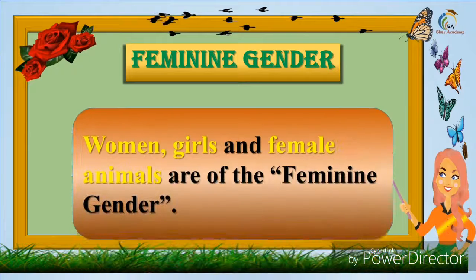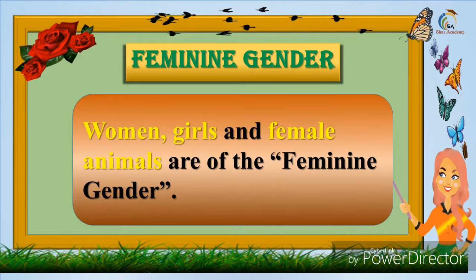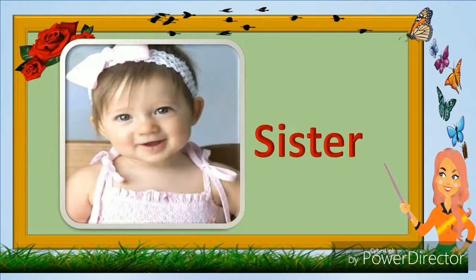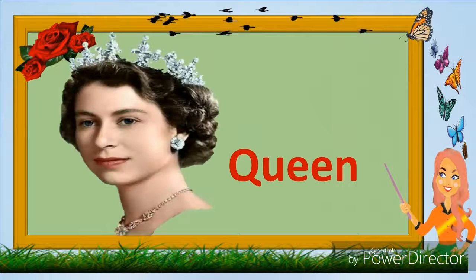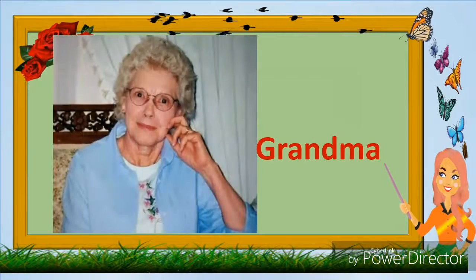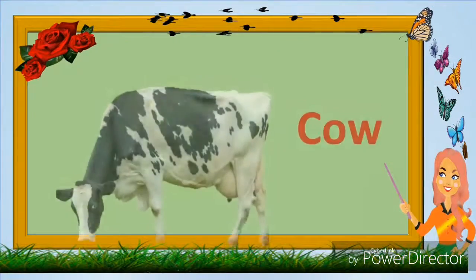Feminine gender. Women, girls, and female animals are of the feminine gender. For example: sister, queen, grandma, cow.